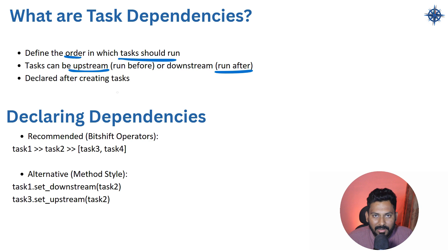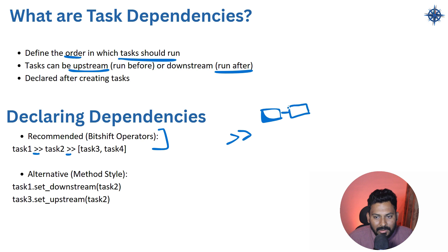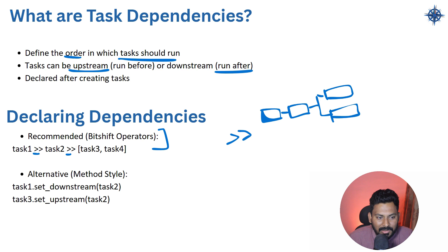There are two ways to define a dependency. One is using the >> operator. For example, task1 >> task2, and then [task3, task4] means task3 and task4 are dependent on task1 and task2. So first task1 triggers, then task2, then task3 and task4 together — this is a parallel dependency because they are in a list array.